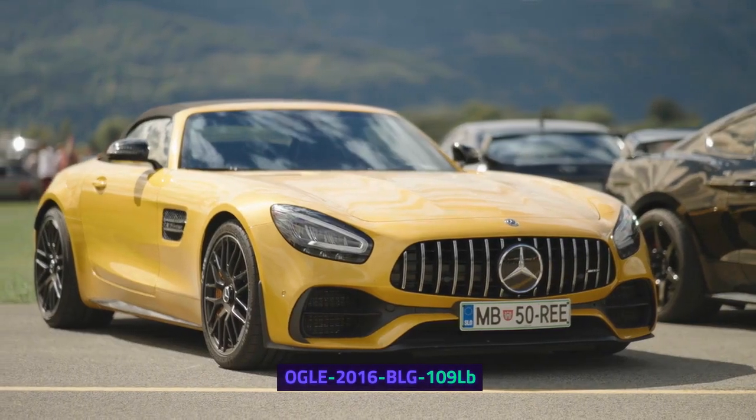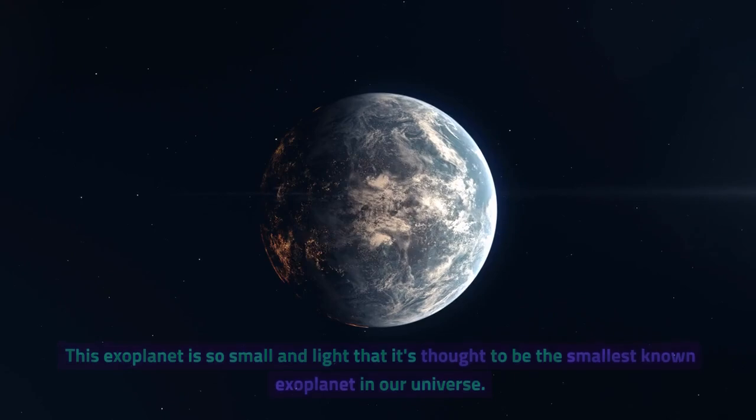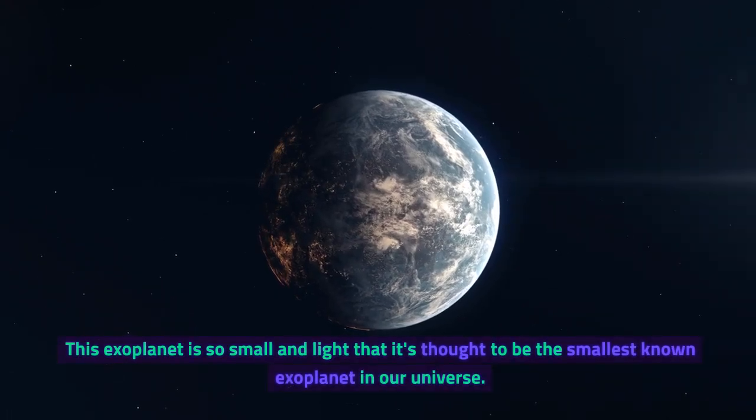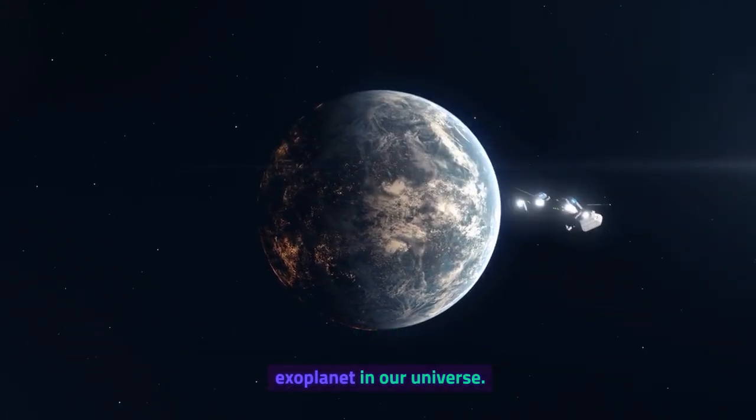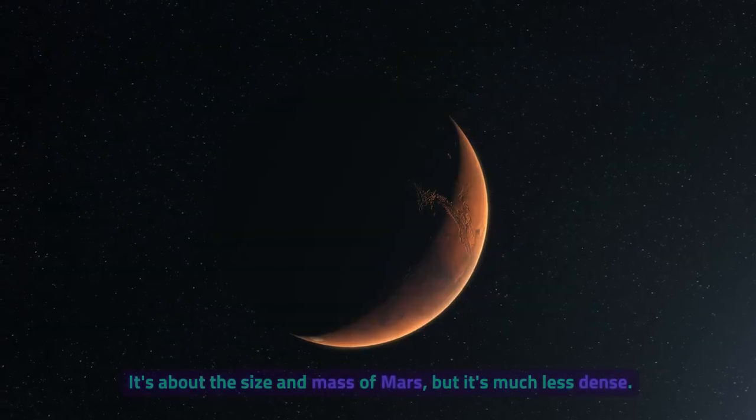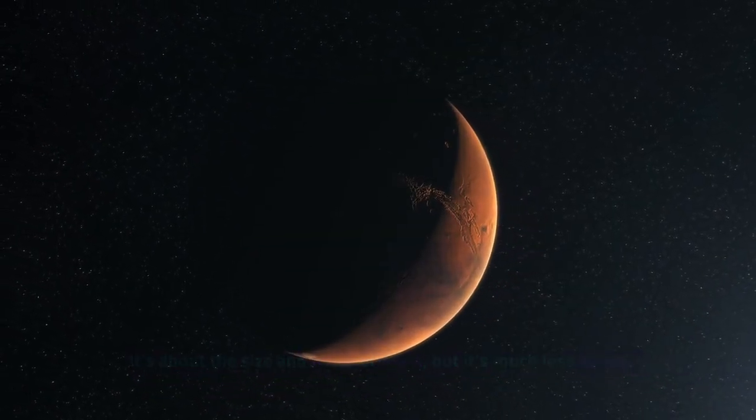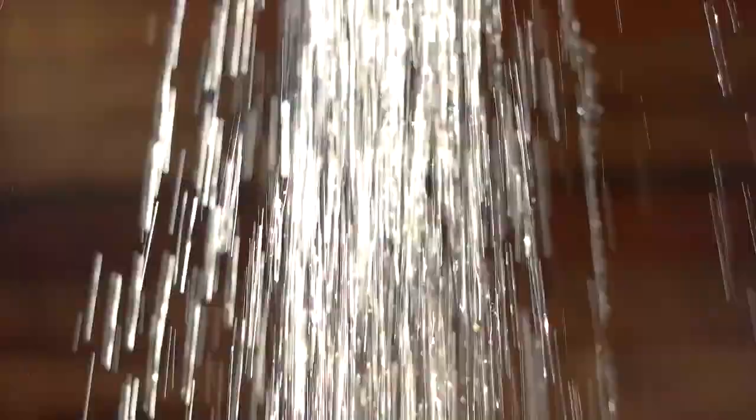OGLE 2016 BLG 109 LB. This exoplanet is so small and light that it's thought to be the smallest known exoplanet in our universe. It's about the size and mass of Mars, but it's much less dense. This is because it's thought to be made mostly of water and hydrogen.